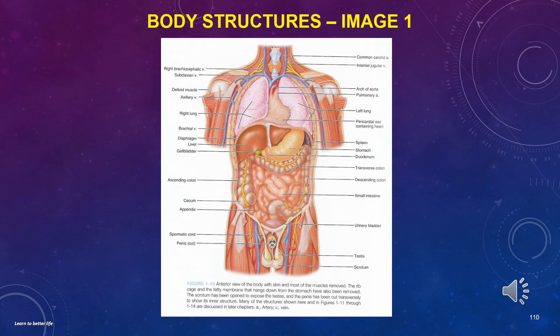This is the anterior view of the body with skin and most of the muscles removed. The rib cage and the fatty membrane that hangs down from the stomach have also been removed. The scrotum has been opened to expose the testes, and the penis has been cut transversely to show its inner structure. Just look at these and get acquainted with the structures — you will not be tested to identify them in this chapter, as we will learn the details in subsequent chapters.